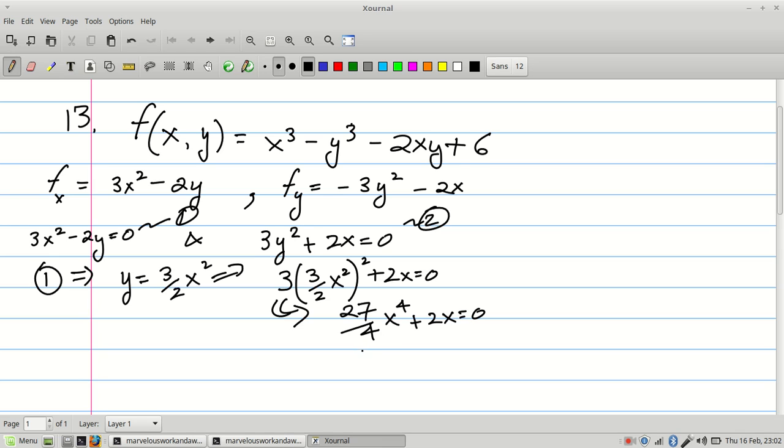What I'm going to do to simplify this is multiply both sides by 4. So what that will effectively do is get rid of the 4 on the bottom over here, and I'll convert the 2 over there to an 8. Now I've got a common factor. I've got an x and an x over there. So I'm going to factor out an x, and I'm going to get 27x cubed plus 8.